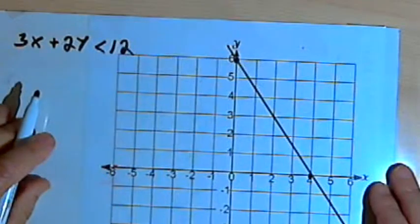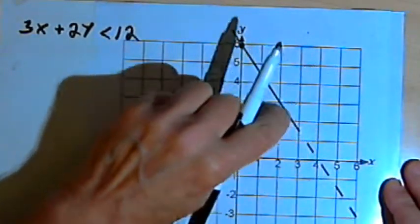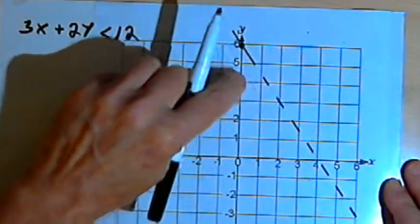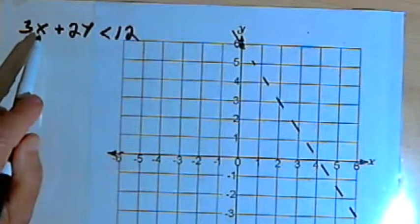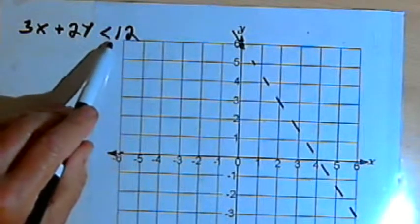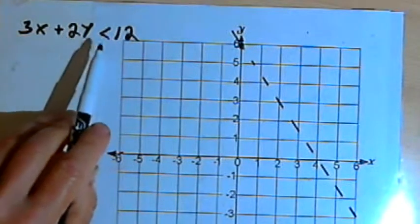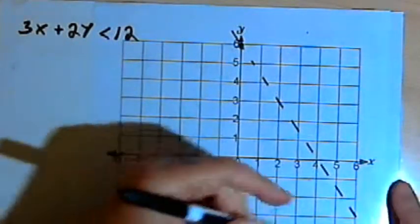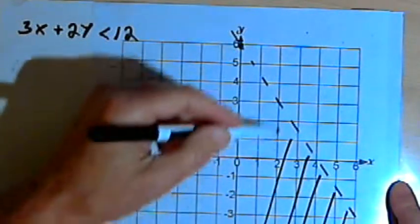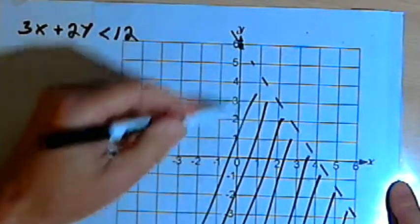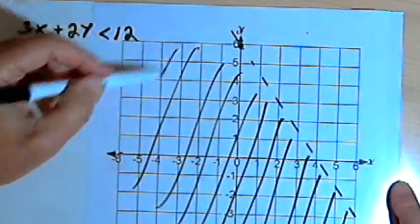It was an inequality, so the first thing I'll do is make this into a dotted line, since it didn't say or equal to. And I've got 3x plus 2y and a less than sign. Once again, if the y is on the left side of the equation and you've got a less than sign, you're going to shade all the area below that line. If it was a greater than sign, I would shade the area above the line.